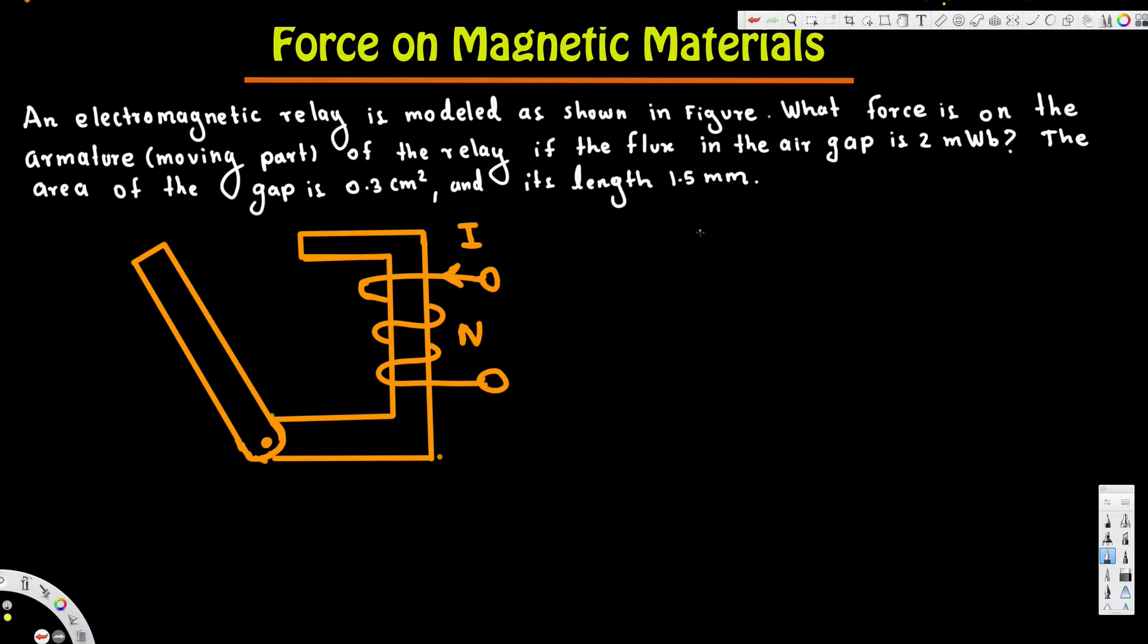Here we have psi, that's given as the flux in the air gap, that's 2 milliweber. We also have the area of the gap, that's 0.3 centimeter square, and the length, that is 1.5 millimeter. The question is asking us to find the force on the armature.